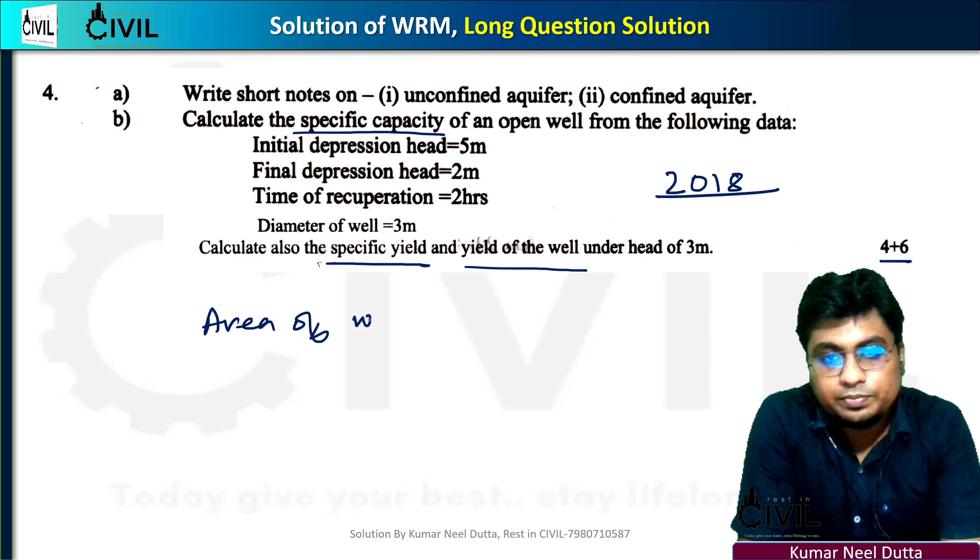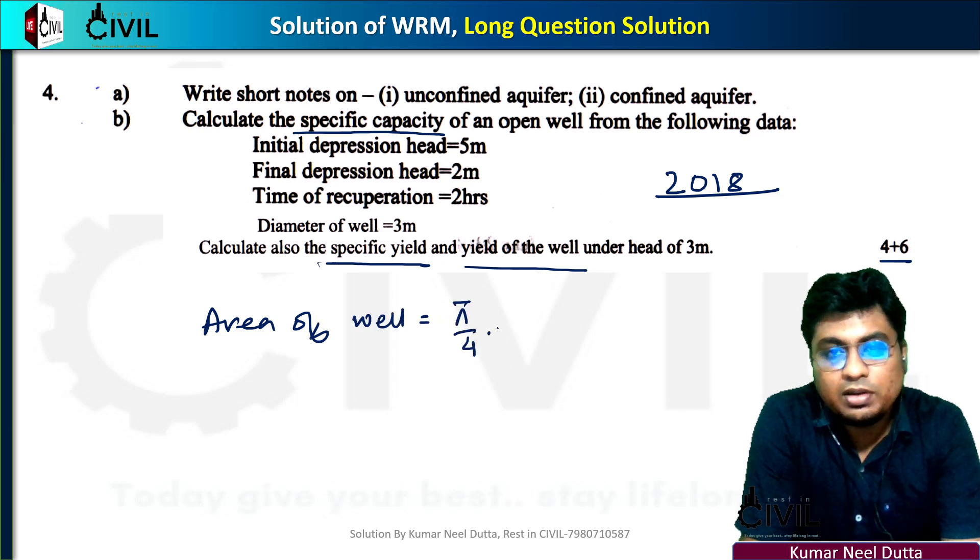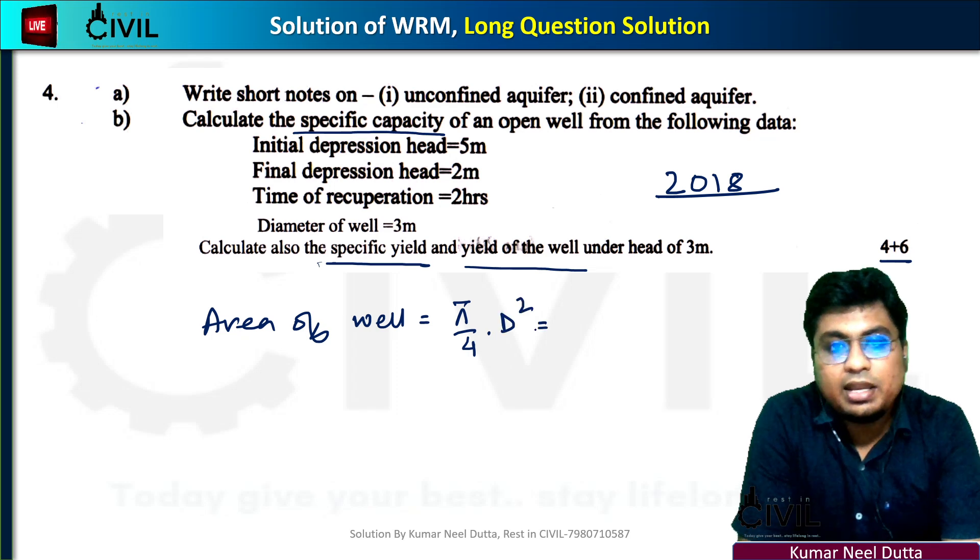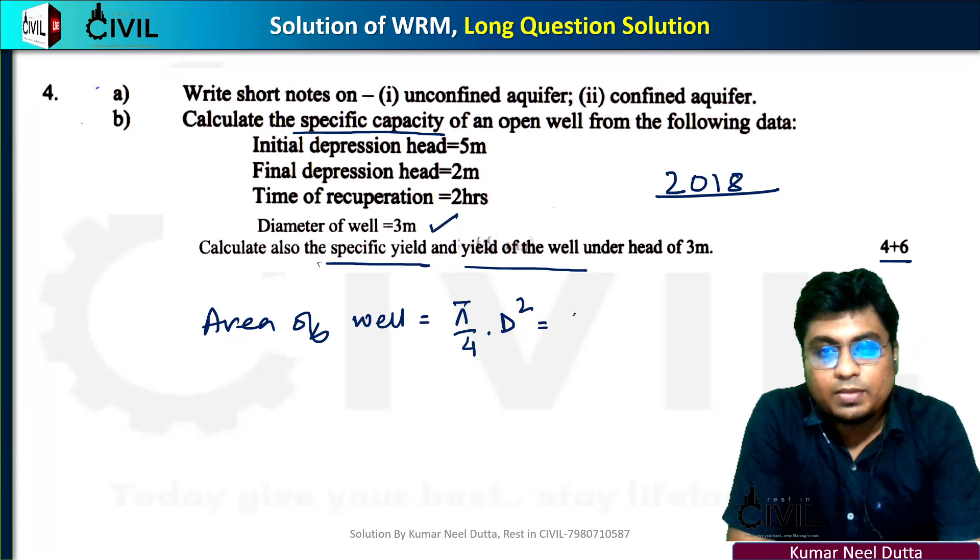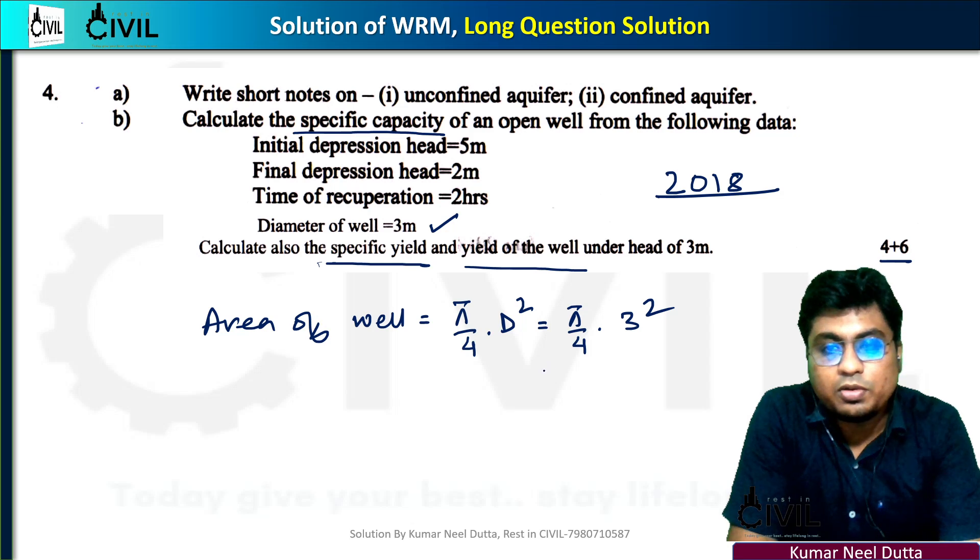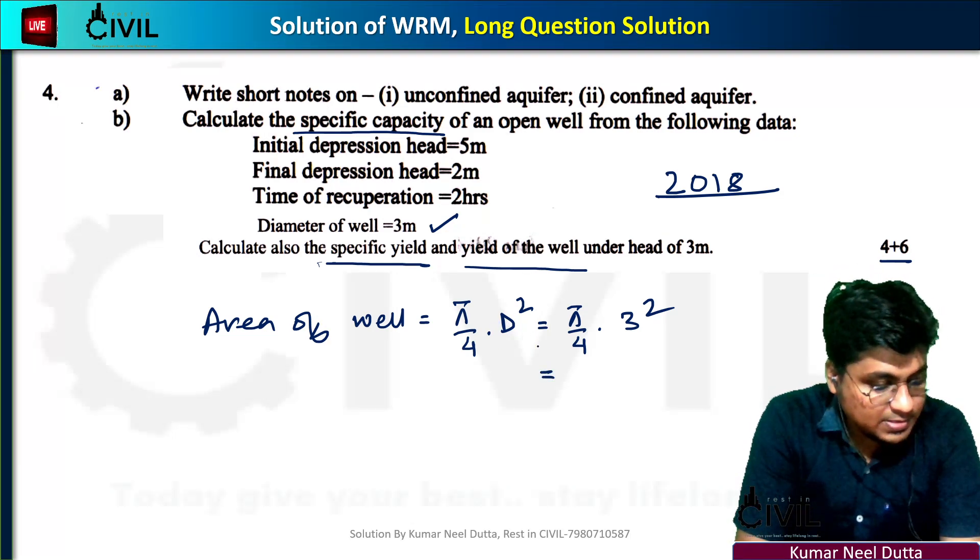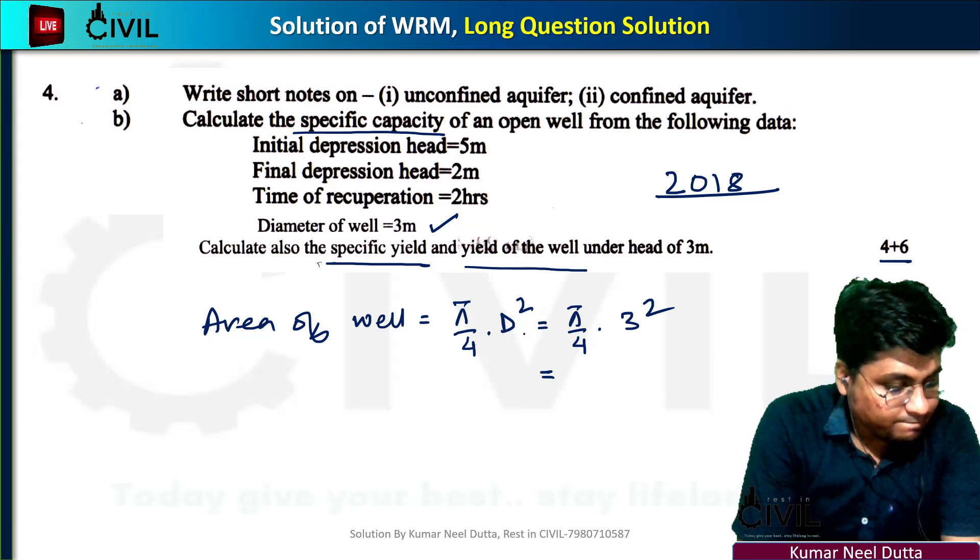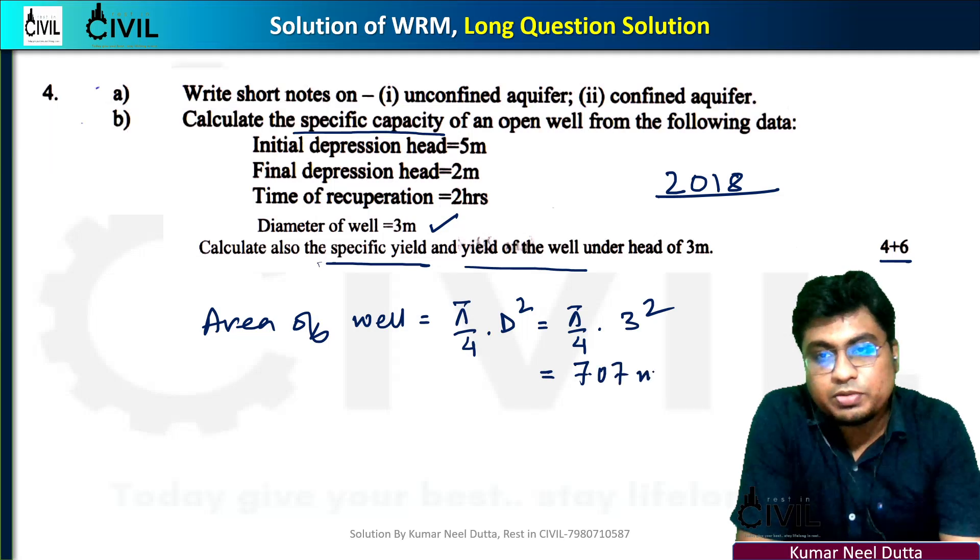First, calculate the area of the well. Area equals π/4 times d squared, where d is the diameter. Area equals π/4 times 3 squared, which gives us 7.07 square meters.